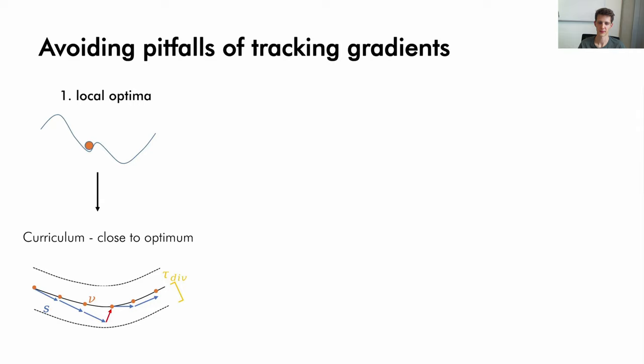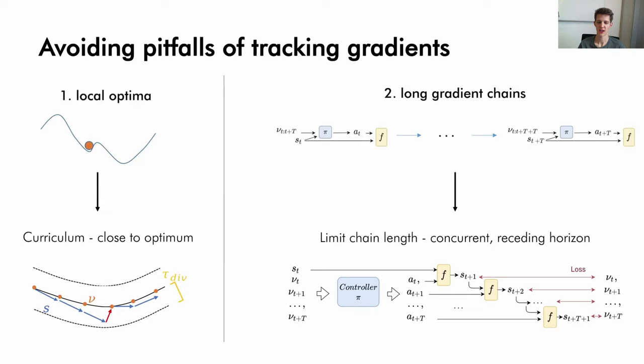The other pitfall is using long gradient chains. Long chains are well known to lead to vanishing or exploding gradients, which renders them unusable. We propose to reduce the length of the gradient chains by evaluating the gradients in a concurrent fashion and only using a receding horizon to do so. As a result, the chain length is limited, which stabilizes the training. These two measures allow us to more stably train policies with analytic policy gradient.